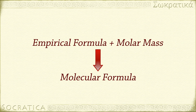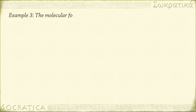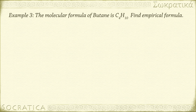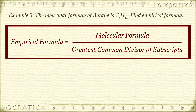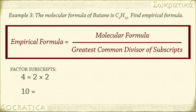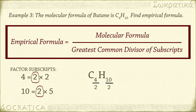What if you see a problem asking you to go in the other direction? Given a molecular formula, what is the empirical formula? Butane, for example, has the molecular formula C4H10. We don't need any percent composition data or molar mass to solve this. The empirical formula is the molecular formula divided by the greatest common divisor of the subscripts. The subscripts are 4 and 10; factoring these, 4 = 2 × 2 and 10 = 2 × 5, so the greatest common divisor is 2. Dividing through: C4/2 H10/2 = C2H5.